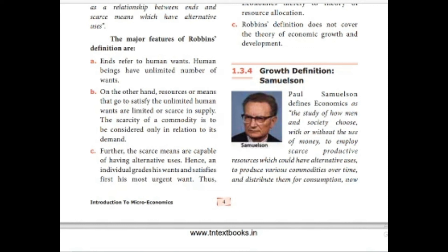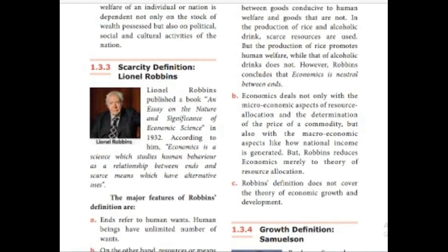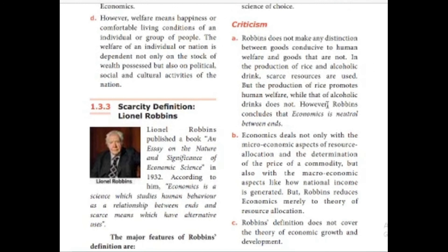Further, scarce means are capable of having alternative uses. Hence, an individual grades his wants and satisfies first his most urgent want. Thus, according to Robbins, economics is a science of choice. Lionel Robbins considered economics as a science of choice because in our day-to-day life we have to make various choices, as we have scarce resources but unlimited wants. Criticism: Robbins does not make any distinction between goods conducive to human welfare and goods that are not. In the production of rice and alcoholic drink, scarce resources are used — but the production of rice promotes human welfare while that of alcoholic drinks does not. However, Robbins concludes that economics is neutral between ends.